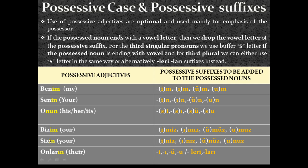For first person plural and second person plural, like the first two cases, for possessed nouns ending with a consonant I apply the full suffix: imiz, ımız, ümüz, umuz. But for possessed nouns ending with a vowel, I drop the vowel letters and apply just: miz, mız, müz, muz. For second person plural, for possessed nouns ending with a consonant I apply: iniz, ınız, ünüz, ünüz. But if the possessed noun ends with a vowel, to prevent vowel clash I drop the vowel: niz, nız, nüz, nüz.